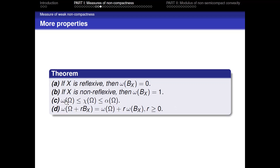De Blasi proved in that paper that if X is reflexive, then w(B_X) = 0. If it is not reflexive, then the weak measure of non-compactness of the unit ball is 1. There is this key inequality: ω ≤ χ ≤ α. De Blasi also proved that w(Ω + r·B_X) = w(Ω) + r·w(B_X), and w(B_X) is either 0 or 1 depending on whether the space is reflexive or not.